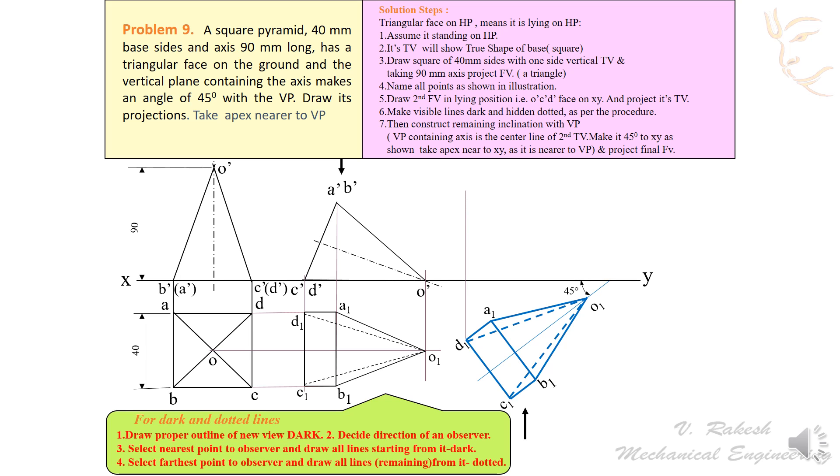Next draw the projectors from A1, B1, C1, D1, O1. Now locate the final front view point: A1 dash, B1 dash, C1 dash, D1 dash. Now join all these points and apply dark and dotted lines rules. In this, O1 dash A1 dash is away from the observer, so this indicates dotted lines.